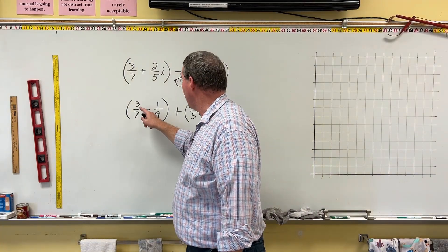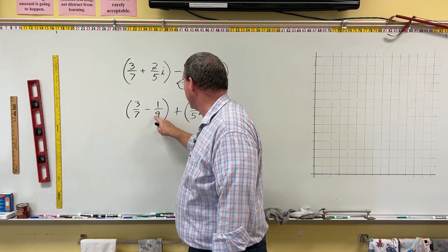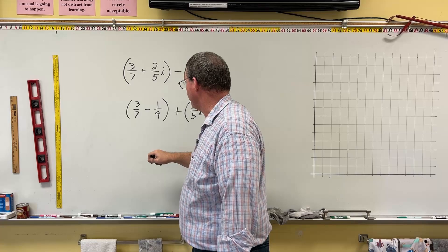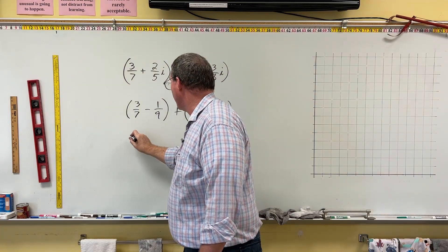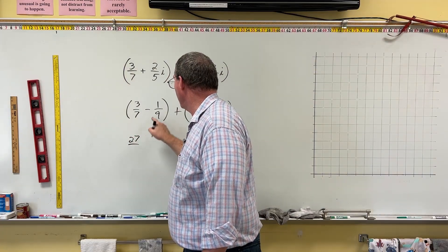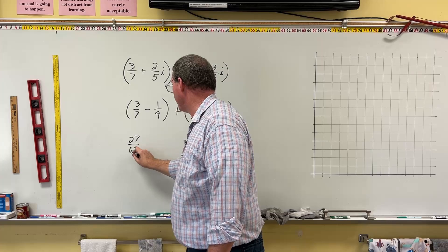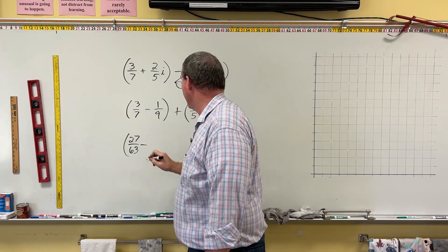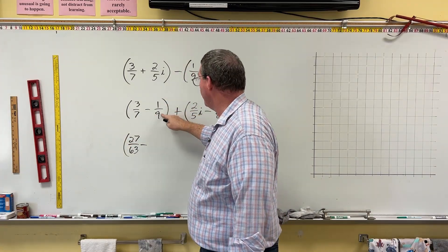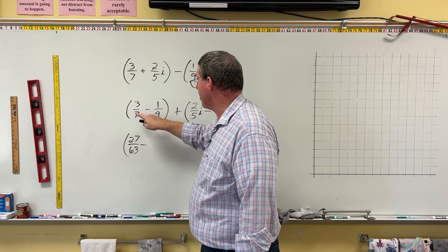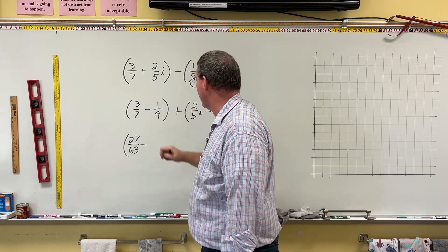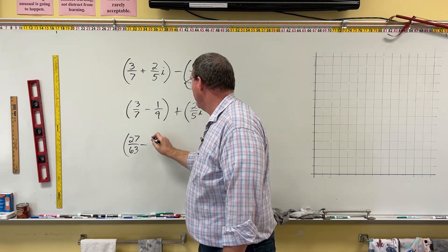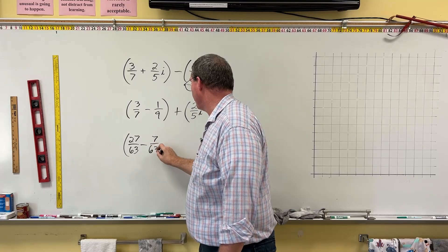So we're going to multiply the 3 and the 7 by 9. 9 times 3, 9 times 7. 9 times 3, that's 27, over 9 times 7, that's 63, minus. Now we're going to multiply the 1 and the 9 by the other denominator, 7. So it would be 7 times 1 and 7 times 9. 7 times 1, that's 7. 7 times 9, that's 63.